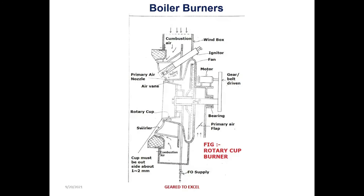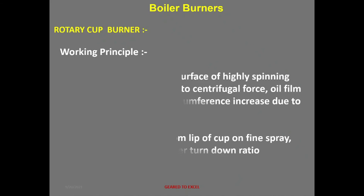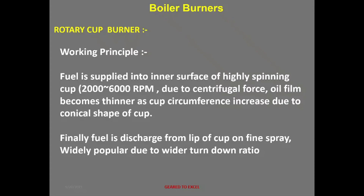Working principle of the rotary cup burner: fuel is supplied onto the inner surface of a highly spinning cup rotating at 2,000 to 6,000 RPM. Due to centrifugal force, the oil film becomes thinner as the cup circumference increases because of its conical shape. Finally, fuel is discharged from the lip of the cup as a fine spray. This burner is widely popular due to its wider turndown ratio.